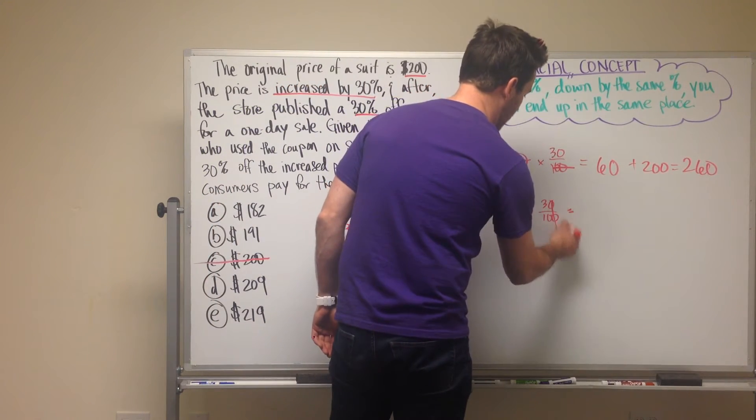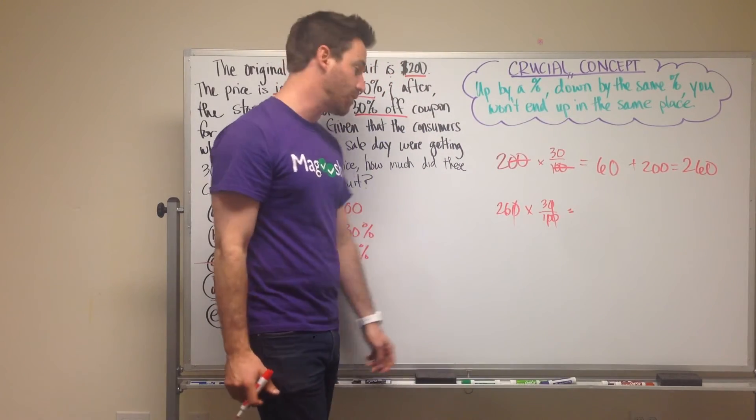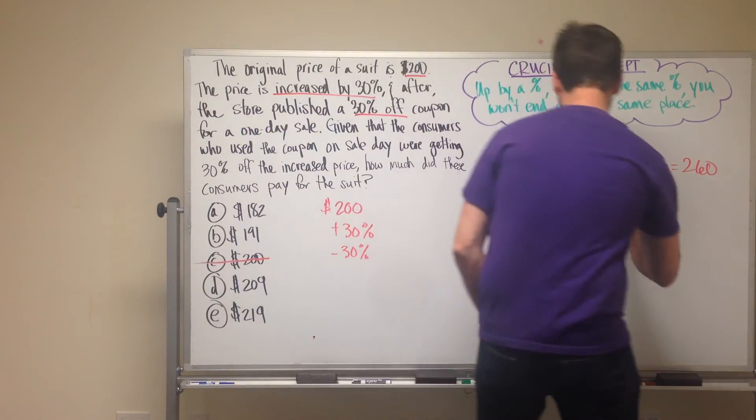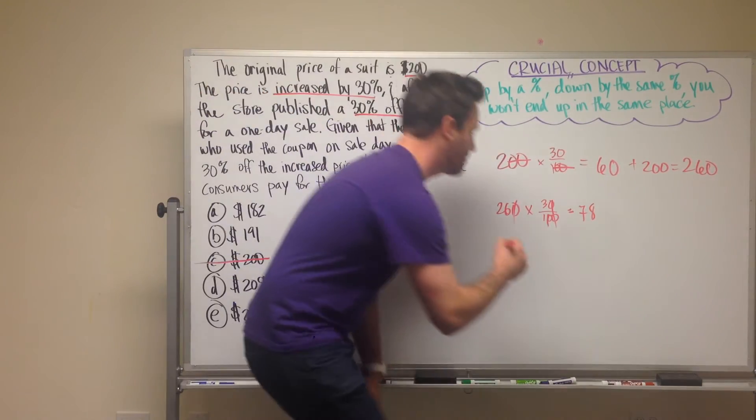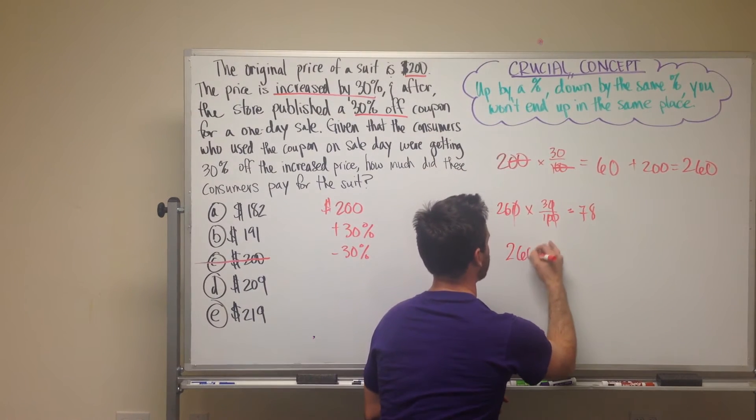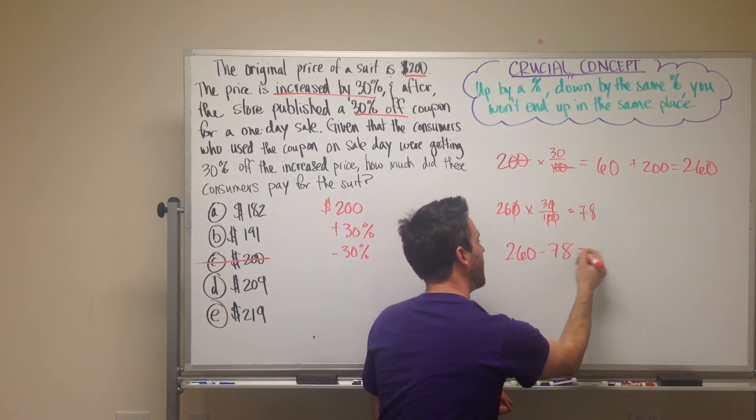So we can eliminate some zeros here. 3 times 26 is 18, carry the 1, 6, 78. So now I have 78 and I'm going to subtract 78 from 260, and that's going to leave me with 182, which we can see is our answer choice here, A.